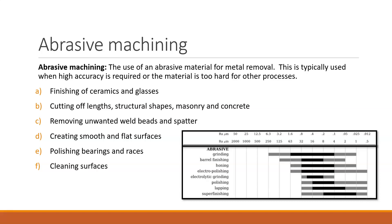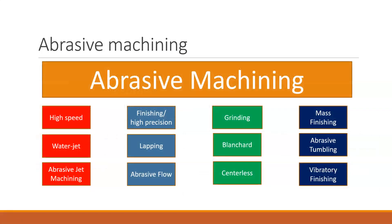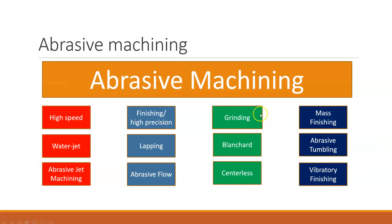That covers bonded abrasives. I'll post these slides online. Here is the whole family of abrasive machining: bonded grinding, which we've been covering; mass grinding or mass finishing; fine finishing such as lapping, abrasive flow, and high-precision finishing; and high-speed abrasive finishing, including abrasive jet machining, water jet, and high-speed abrasives. I'm going to close this section out, post it on Blackboard, and we'll start to move into joining.